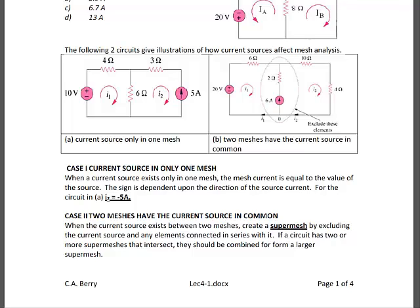Now let's discuss how you handle current sources when you do the mesh current method. There are two types of current sources. One is when you have a current source in an outer branch, such as in this bottom left circuit. The 5 amp current source is in an outer branch. Since we use the mesh current method to find unknown mesh currents, for the 5 amp source you would set I2 equal to negative 5 amps and you do not do KVL.